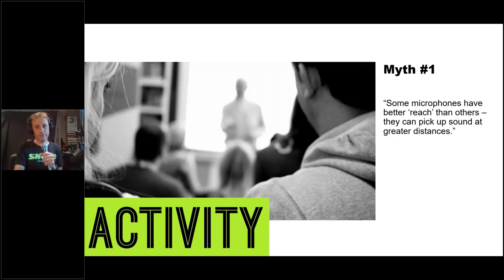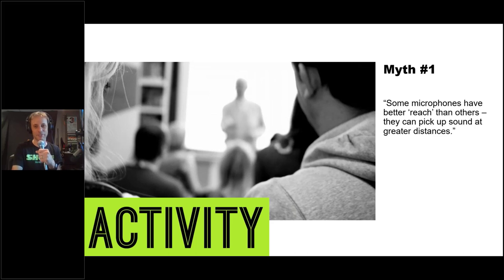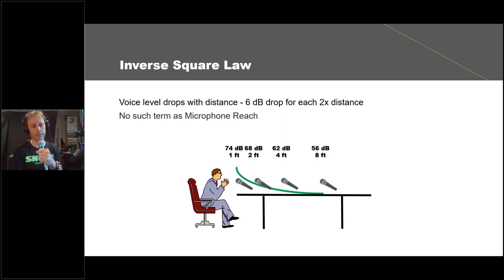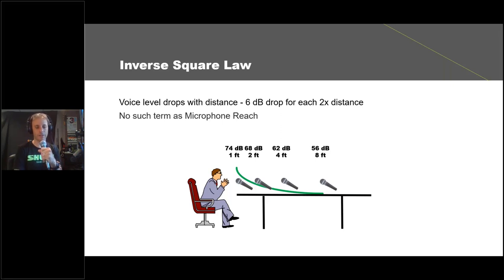Myth number one: some microphones have better reach than others and can pick up sound at greater distances. Of course, that's a myth. Microphones are essentially a measurement tool — they measure variations in air pressure that are sound waves. They don't do anything actively to go out and capture sound. Microphones can't work like a telephoto lens — because sound waves are so much bigger and longer than light waves, there's no way to practically make a microphone that can do that.